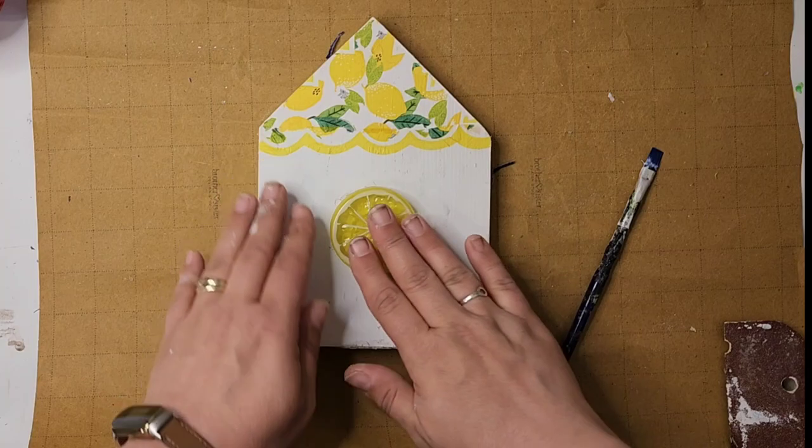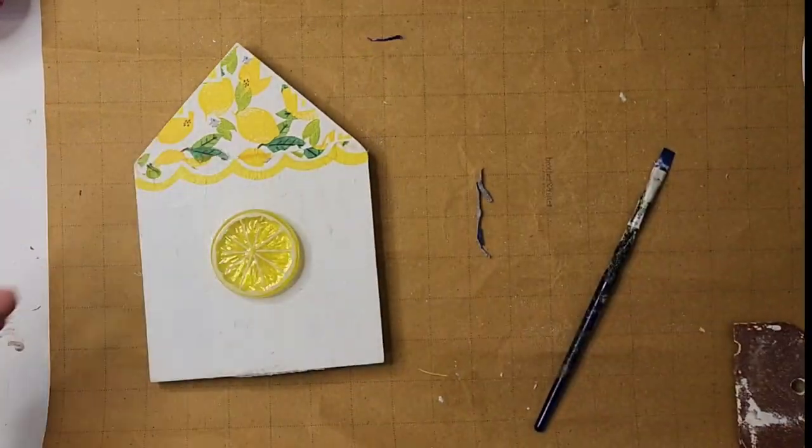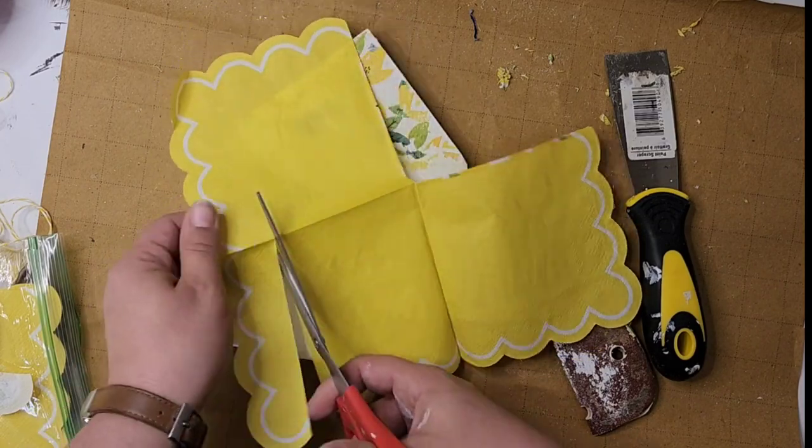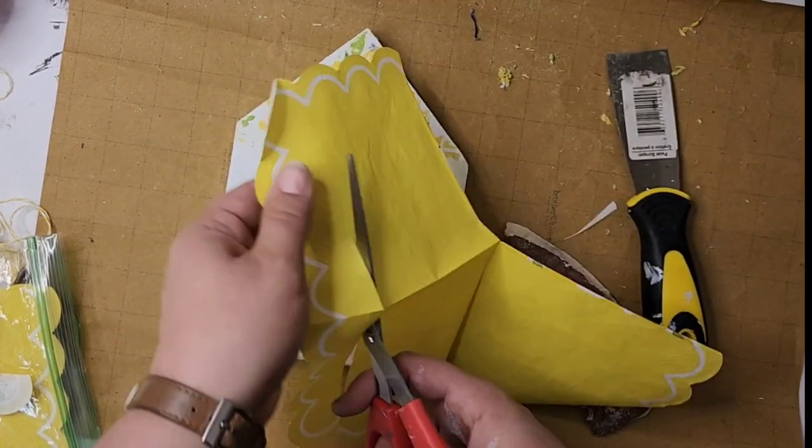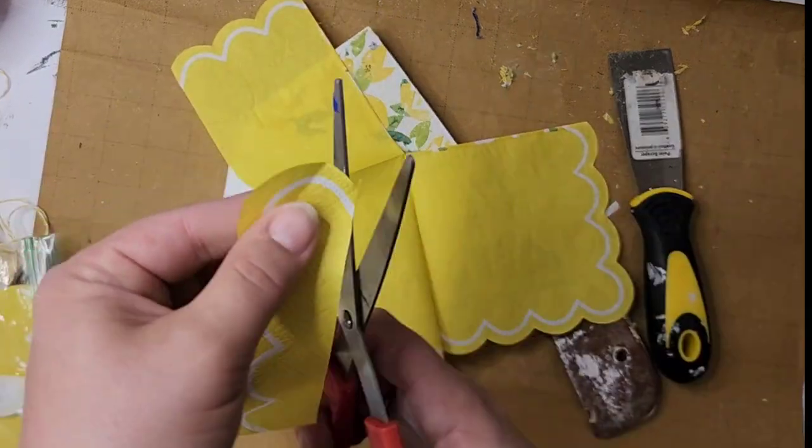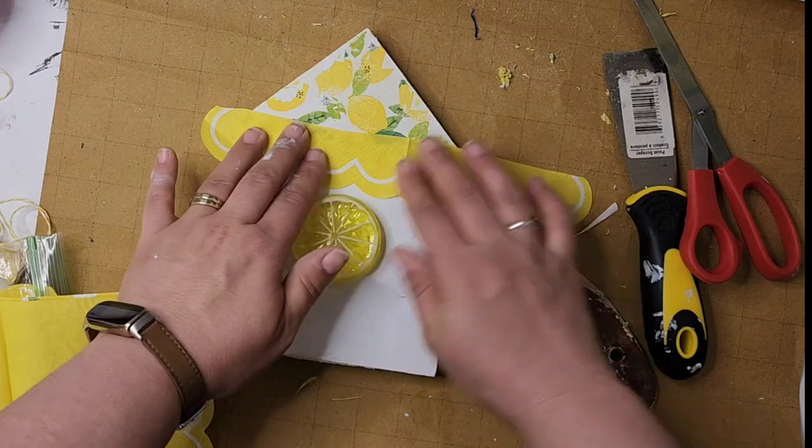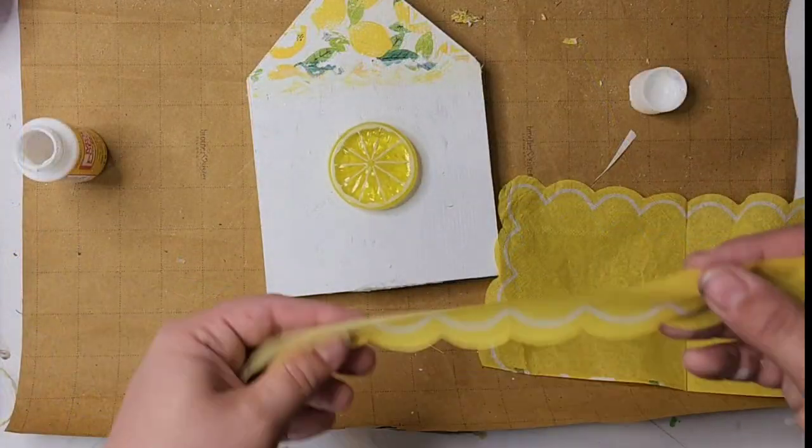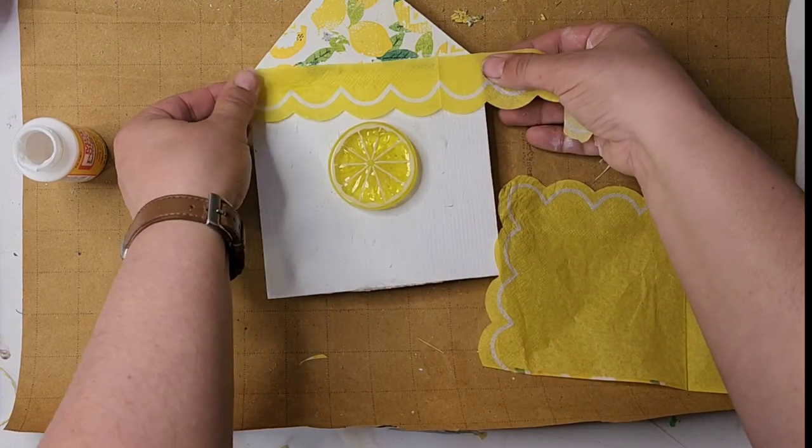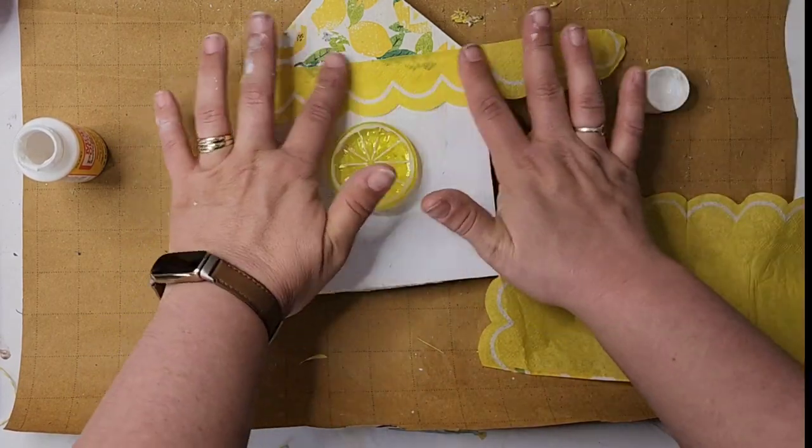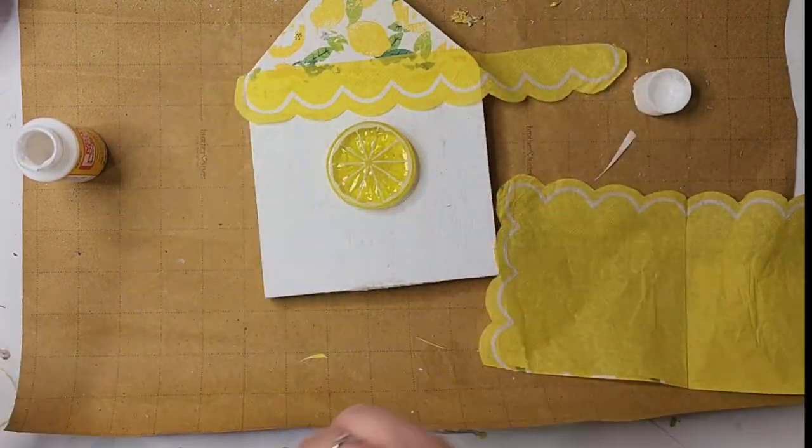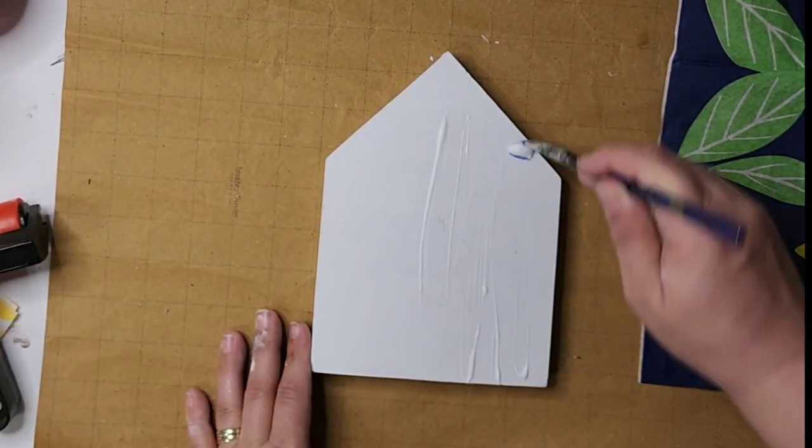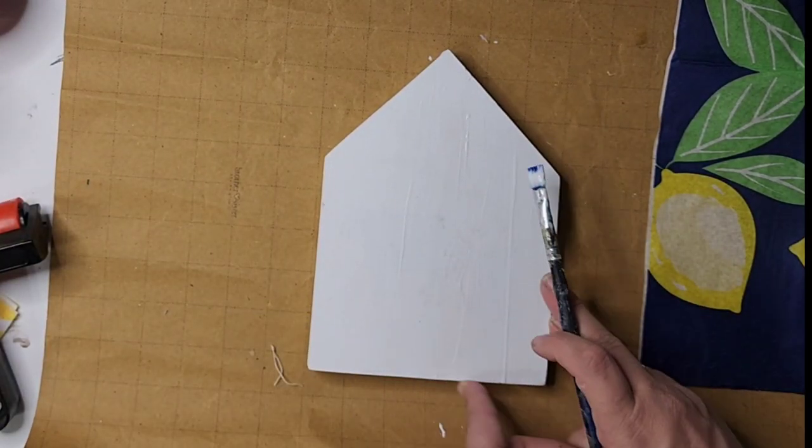Next I'm coming in and gluing this little plastic lemon slice on the front. My sweet friend from Happiness Created sent that to me in a box and I finally am able to use it. To finish off this sweet little lemon house, I'm just gonna put that yellow scalloped edge on the top and on the bottom. I just Mod Podged it down.